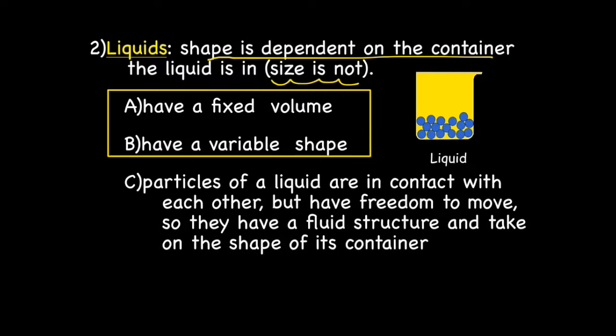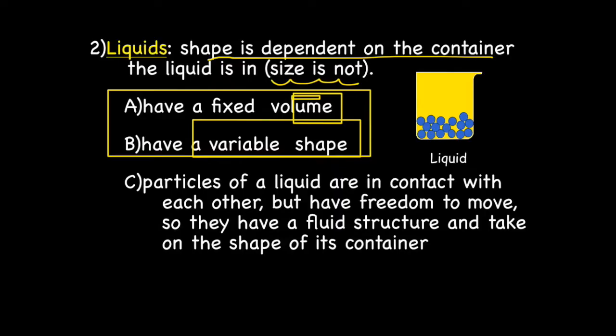Using water as our example: say I have exactly one cup of water in a cup — that's cup-shaped water. If I take that water and dump it out on the table, I still have a cup of water, but it's no longer cup-shaped; it's now table-shaped. So the amount or volume of water remains the same, but the shape is variable. The shape the liquid takes is the shape of the container it's in. This is because particles of a liquid are in contact with each other, but they do have some freedom to move — they have a fluid structure.